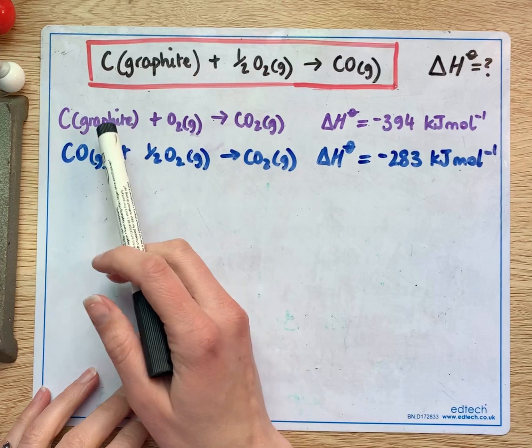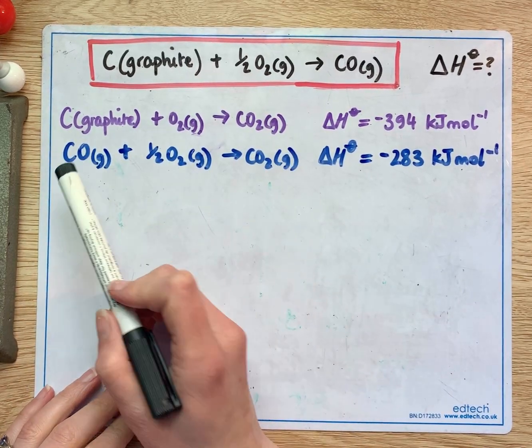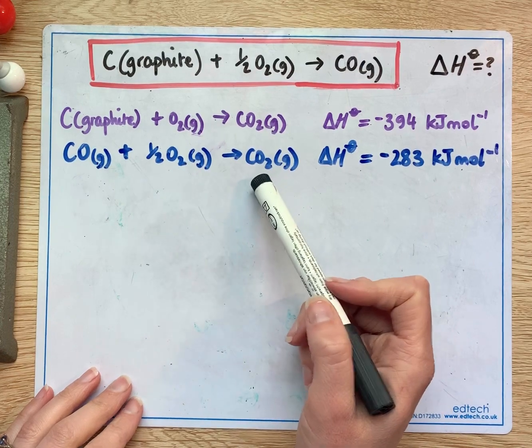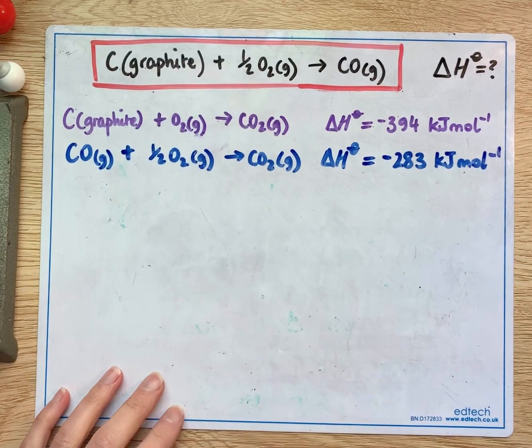What we do know is that graphite and oxygen can also make carbon dioxide and we know that carbon monoxide and oxygen can make carbon dioxide. So we have some information here that we can rearrange to find out the enthalpy change for this equation.